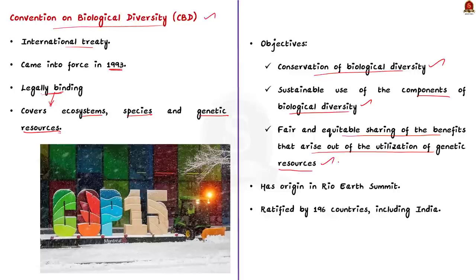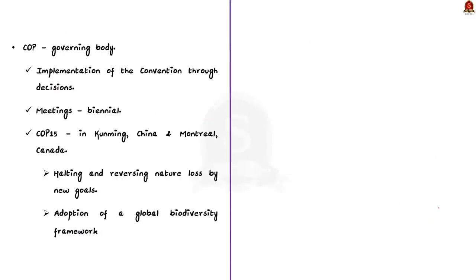This convention is related to the 1992 United Nations Conference on Environment and Development, famously known as the Rio Earth Summit. 196 countries have ratified this convention, including India. The governing body is the Conference of Parties (COP), whose duty is to advance the implementation of the convention through decisions taken at periodic meetings held every two years. The 15th meeting of this Conference of Parties — hence COP15 — was recently concluded. It was held in two phases: one in Kunming, China, and the other in Montreal, Canada.